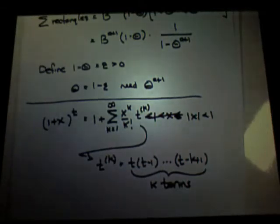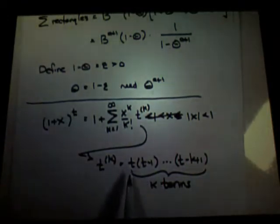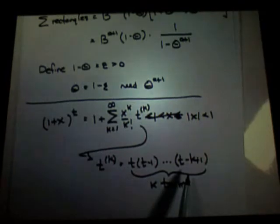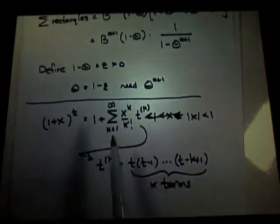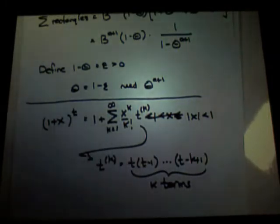Now Rob says, isn't there an n choose k there? In the event that t is an integer, eventually you'll get to zero, and then once you get to zero, it all turns out to be zero and the infinite sum becomes a finite sum.